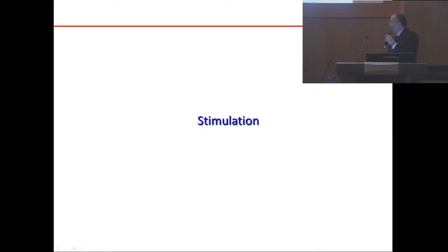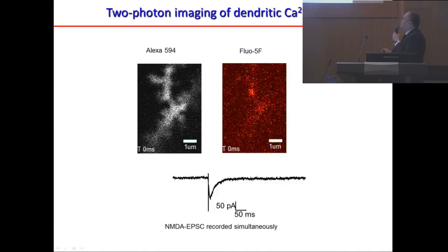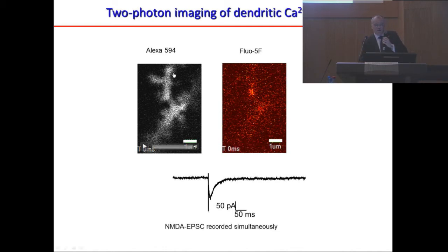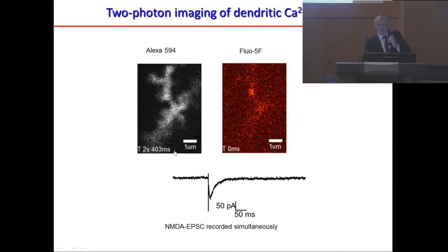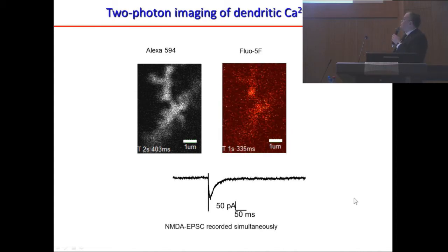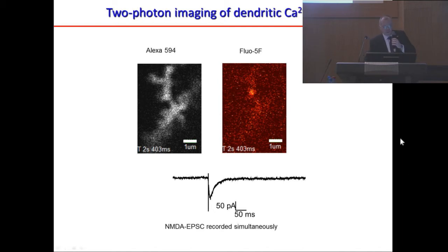Here you can see a part of the dendrite during electrical stimulation. On the left side, the morphological tracer shows nicely all the structure of the cell without any fluorescence change during stimulation. On the right side, the calcium dye is very dim normally, but during electrical stimulation you see a flash. This is the way you can locally observe calcium dynamics and how different dendritic spines respond to synaptic inputs — looking at spine after spine independently.